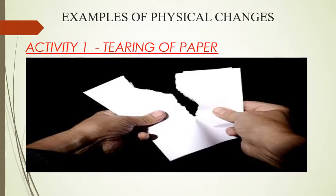Activity 1: Tearing of paper. Once tearing of paper is done, obviously you cannot join the pieces back to make the original piece. The changes noticed here are in the shape and size of the paper.